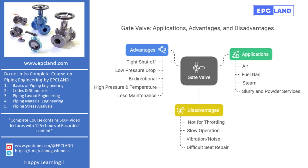There are even special types of gate valves for handling more challenging materials like slurry and powdered products. One such example is the knife gate valve, which is specially designed to cut through thick or viscous media like slurry, pulp, or powders.